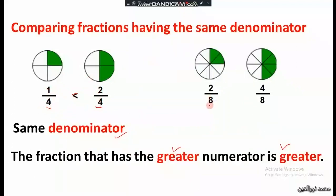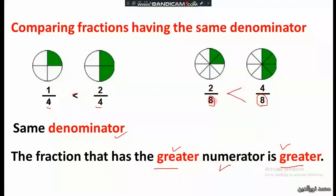Another example also with the same denominator: we look at the numerator. The fraction with the greater numerator is the greater one. So 4 is greater than 2, meaning 4 over 8 is greater than 2 over 8.